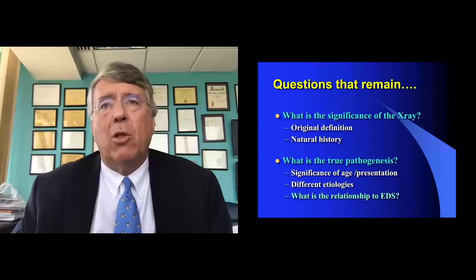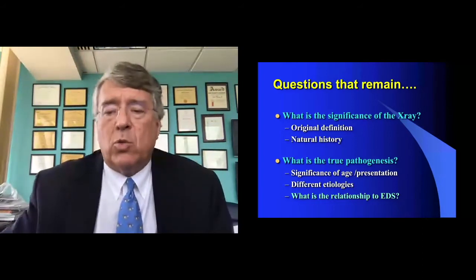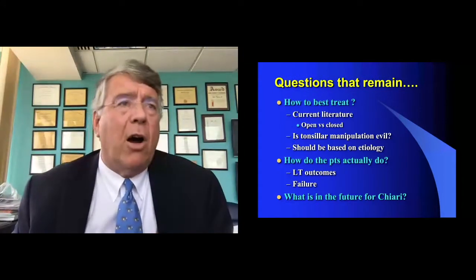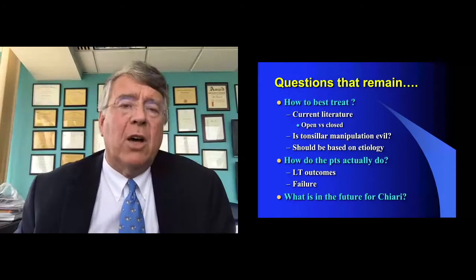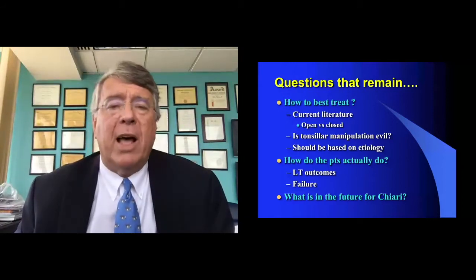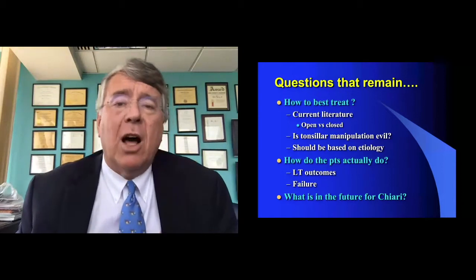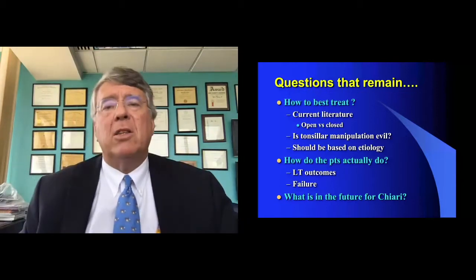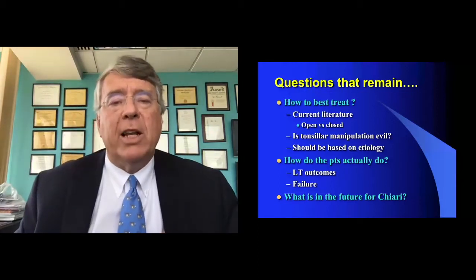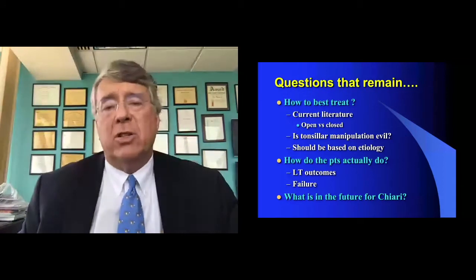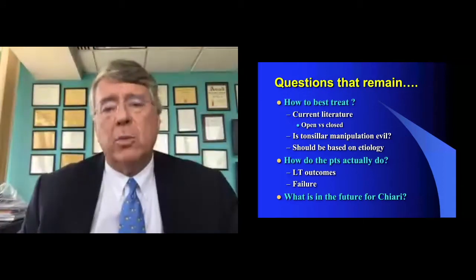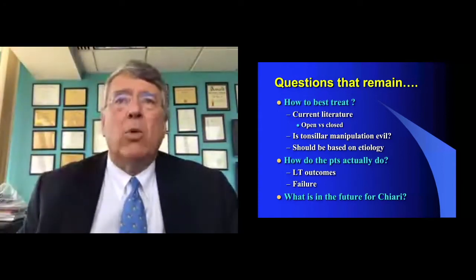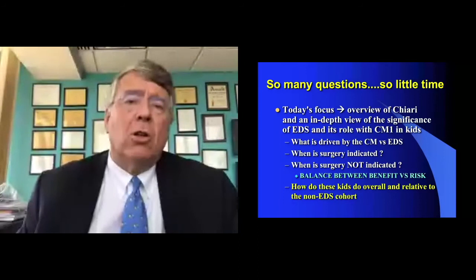What's causing the tonsils to be below the foramen magnum? That's the ultimate question. What's the relationship with EDS, and how do we best treat this? We still debate amongst neurosurgeons: do you do bone only? Do you do an open with a duraplasty? Do you stent the fourth? What about tonsillar manipulation? We also have a lot of short-term studies, but long-term studies are critical. What about failure — how do you diagnose it, what does it mean, and what do you do with it?